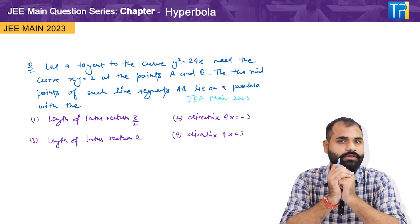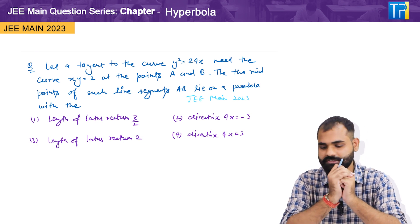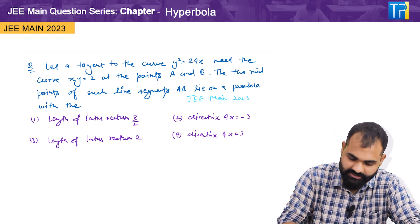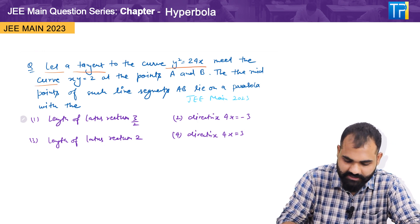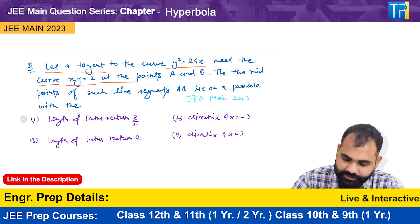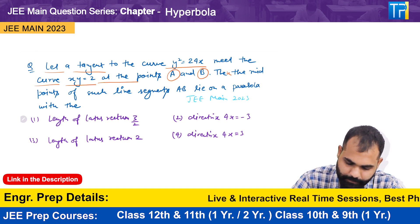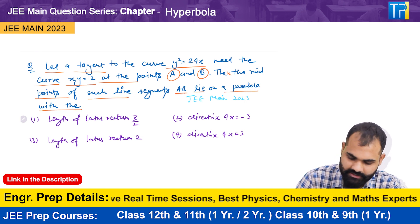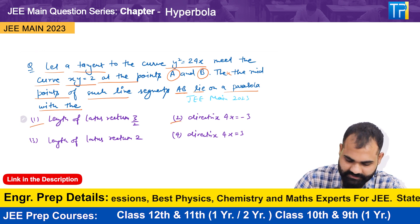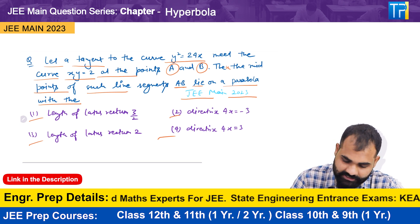Hello everyone, welcome back. Today we are solving a new mathematics question from hyperbola, specifically from JEE Main 2023. The question asks: let a tangent to a given curve meet the curve xy = 2 at points A and B. Then the midpoints of such line segments AB lie on a parabola. Four options are provided and we need to identify the correct one.